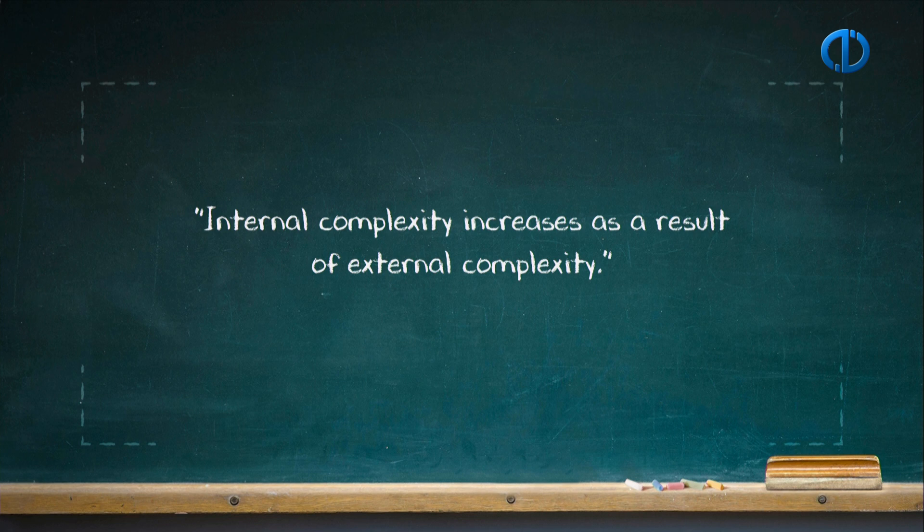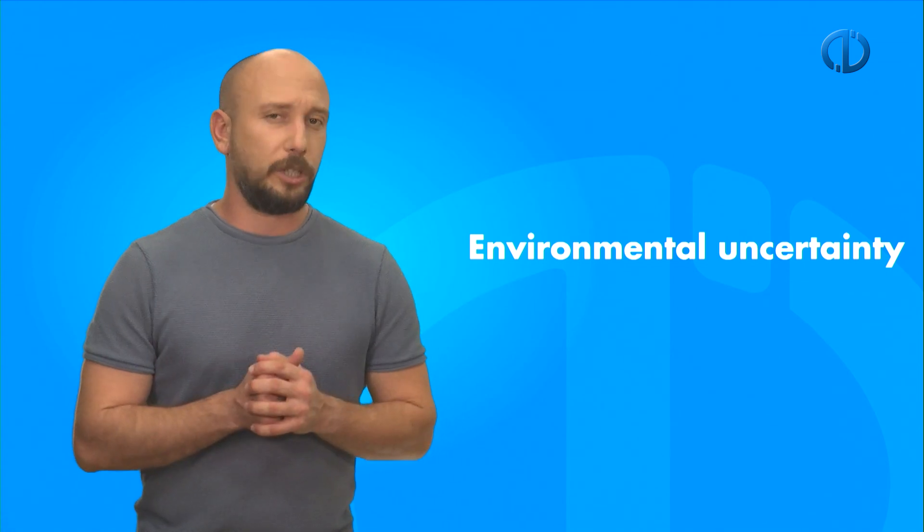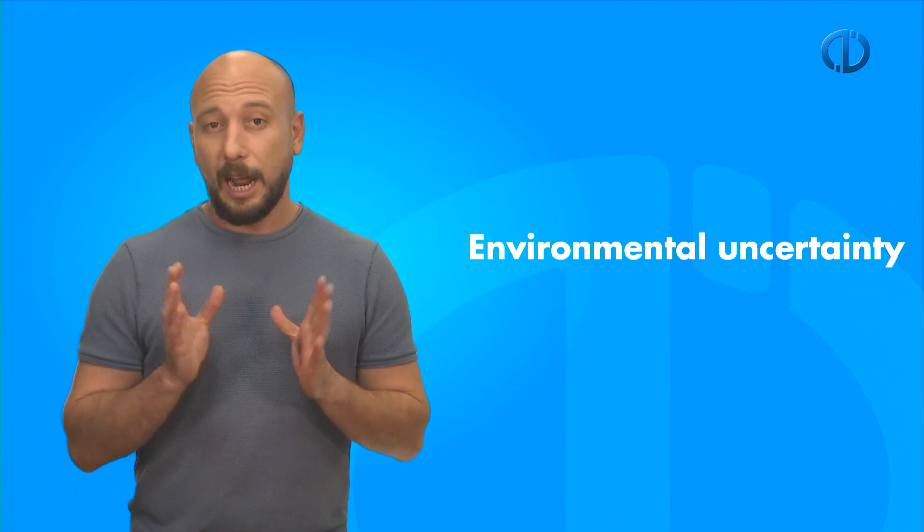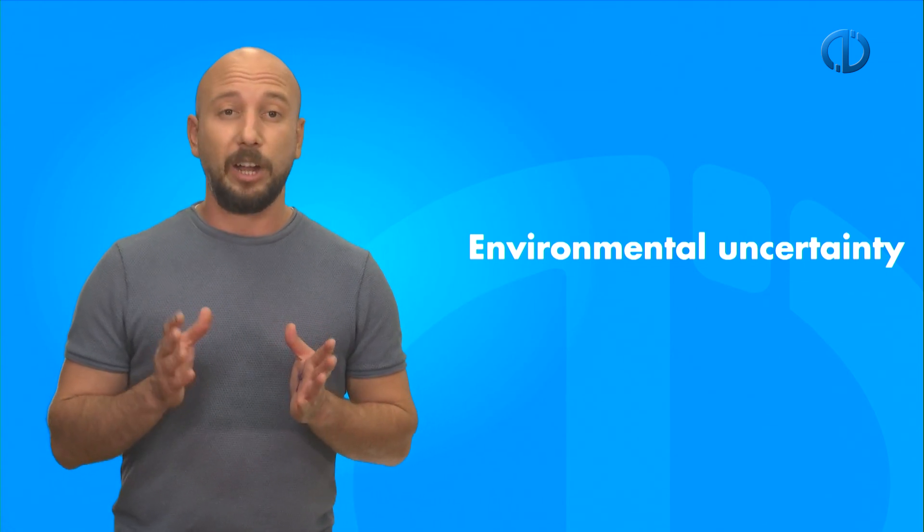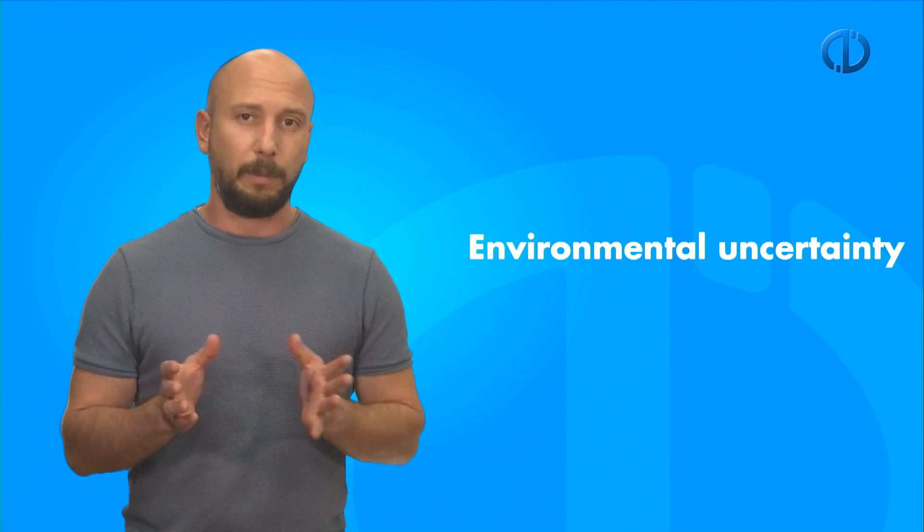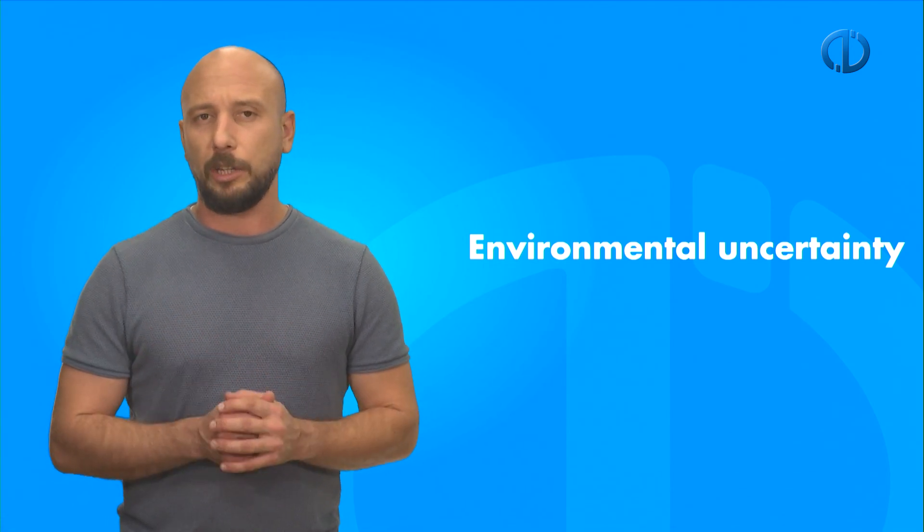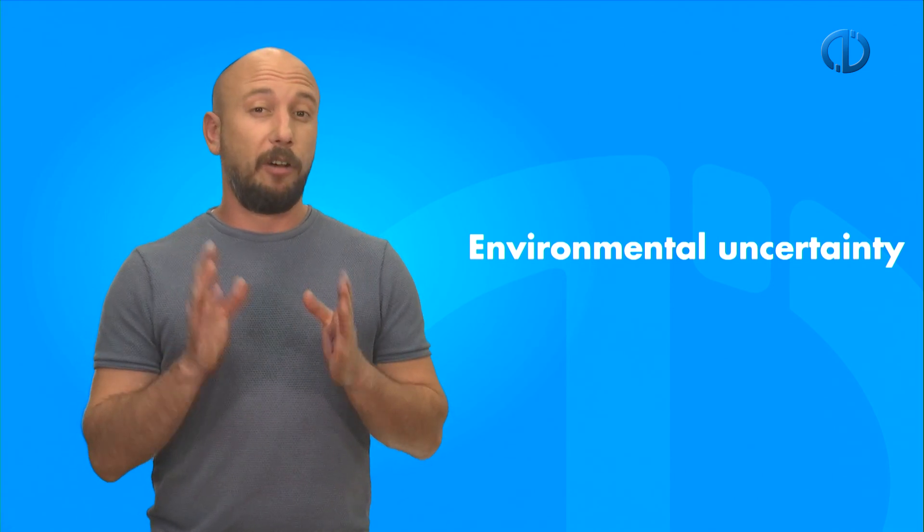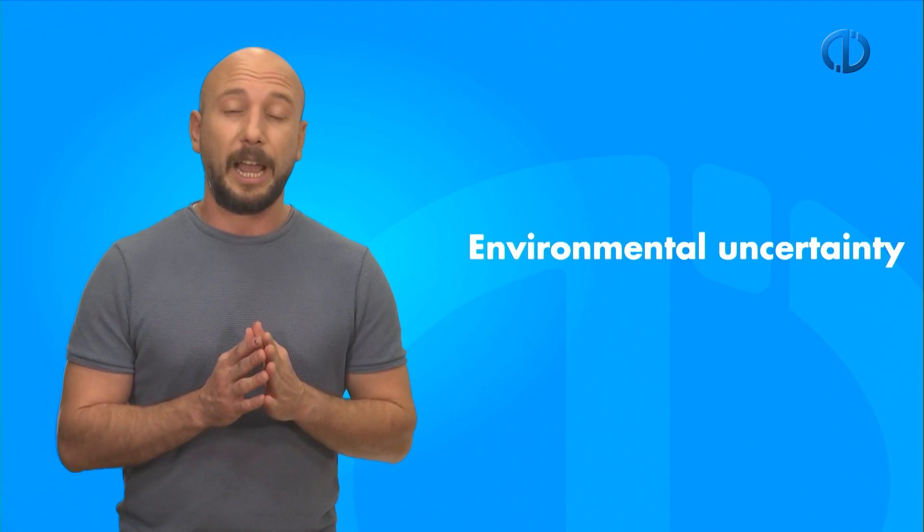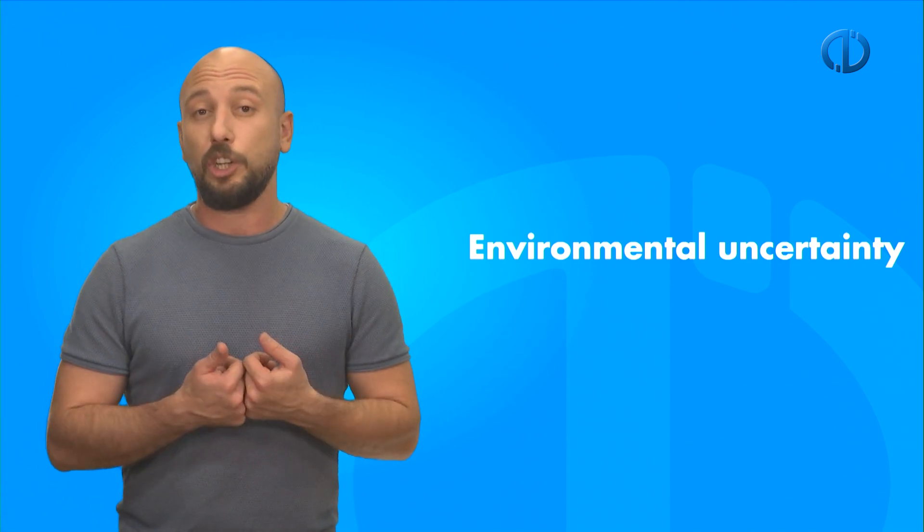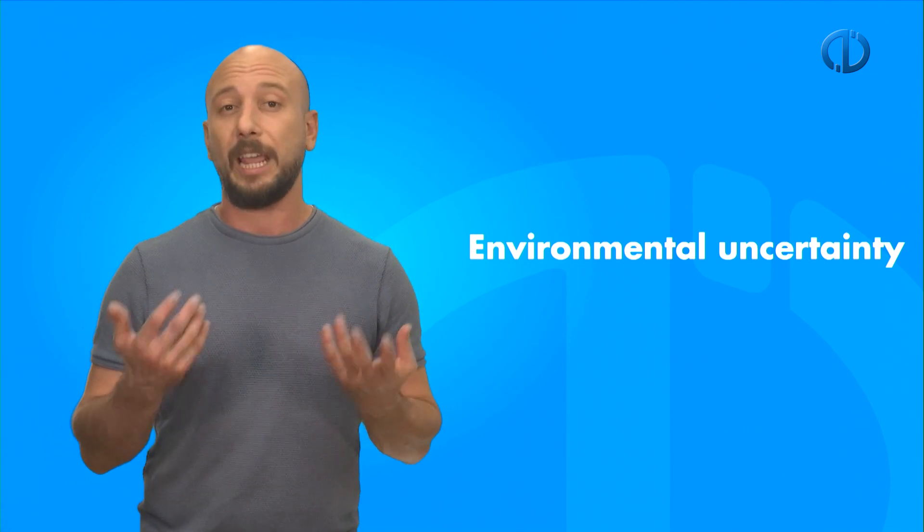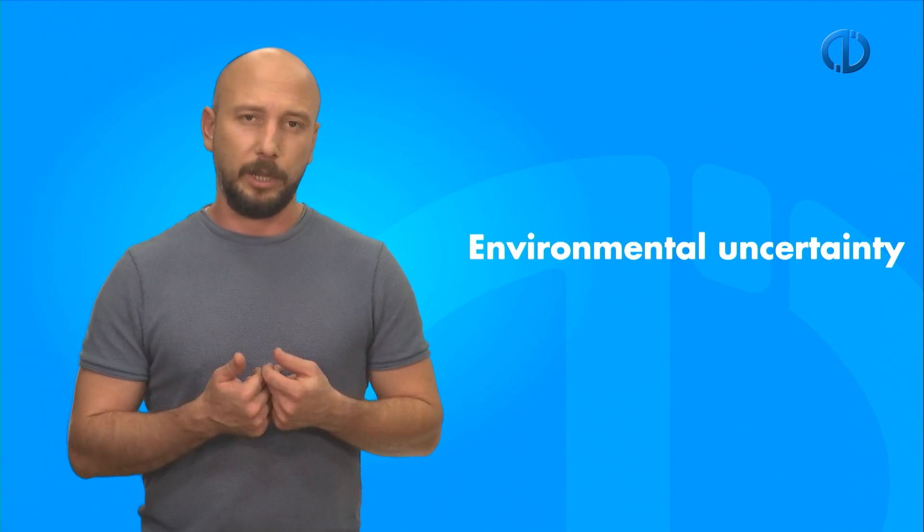At this point, maybe we should talk about environmental uncertainty. Environmental uncertainty is defined as a function of environmental complexity and speed of change. Researchers have focused on how the appropriate design should be for the organizations trying to survive in stable and unstable